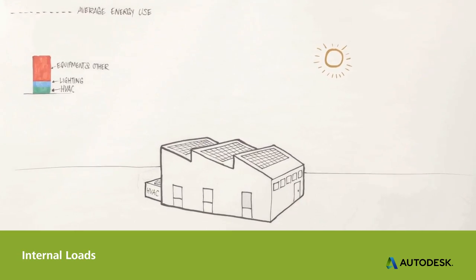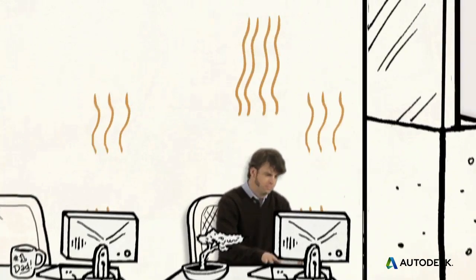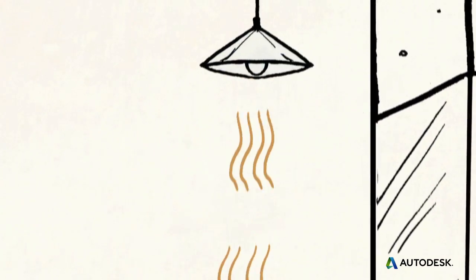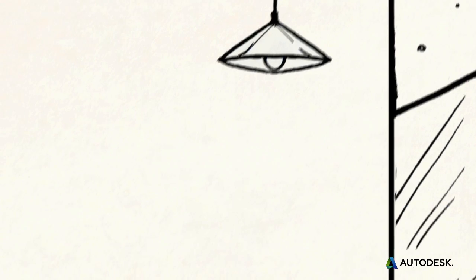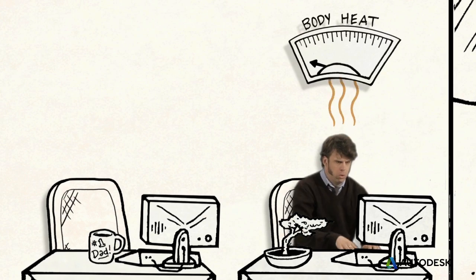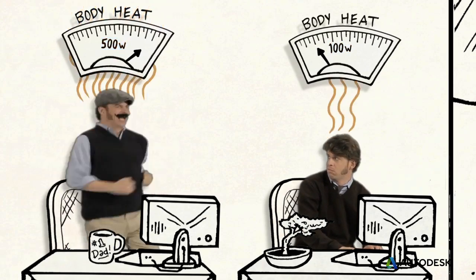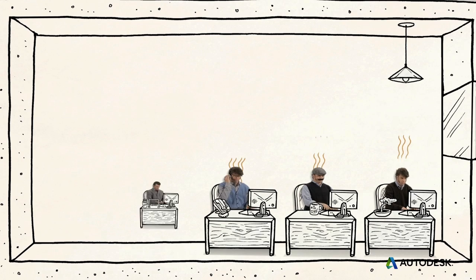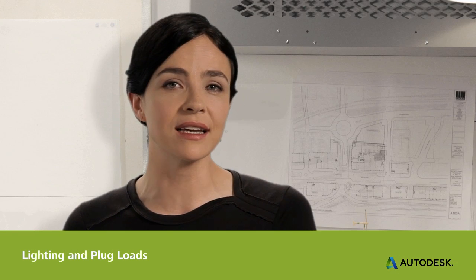Buildings also have internal loads that need to be managed by cooling. Heat is generated inside a building by lighting and equipment. For example, an incandescent light converts 90% of its electricity directly to heat. And then there's heat and humidity from people — an adult at rest generates about 100 watts of heat, while someone exercising can generate over 500 watts. In a building full of people, that's a lot of heat energy. All this heat can add to your building's cooling load, or, if harnessed wisely, it can help you by reducing your heating load.